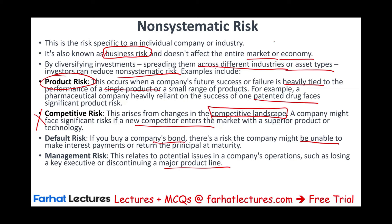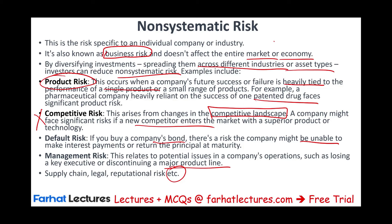There are all sorts of non-systematic risks specific to a company, like supply chain risk if you can't get raw materials, legal liability risk, and reputational risk — for example, if the company is hacked and customer information is exposed. To address non-systematic risk, an individual should diversify: don't put all your eggs in one basket.